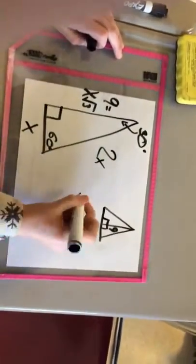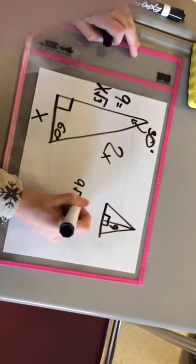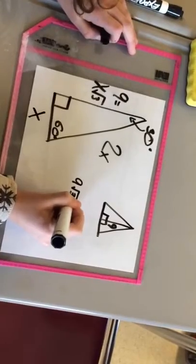So then since we know 9 is on the other side, it would be 9 root 3. We know that X is 3.